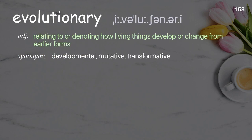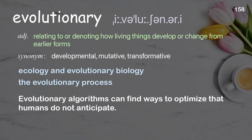Evolutionary: relating to or denoting how living things develop or change from earlier forms. Examples: ecology and evolutionary biology, the evolutionary process. Evolutionary algorithms can find ways to optimize that humans do not anticipate.